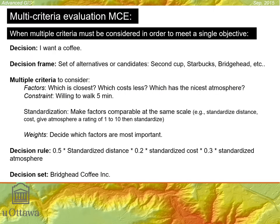So what is multi-criteria evaluation, MCE for short? It could also be called multi-criteria analysis, MCA. This is something you do all the time without even knowing you're doing it — it's the idea of having multiple criteria, considering multiple things in order to meet some objective.